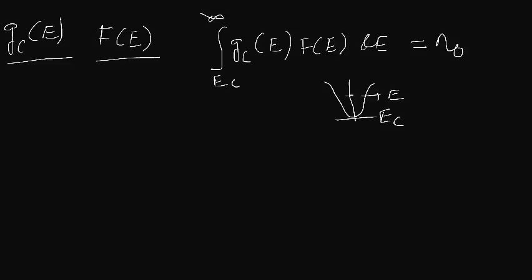We take the upper limit as infinity because the surface potential is infinite — the electron behaves as if it is trapped inside a potential well where electrons are relatively free within a confined dimension but cannot escape. This is why we take the upper energy limit as infinity.